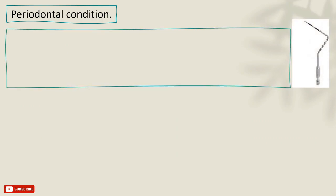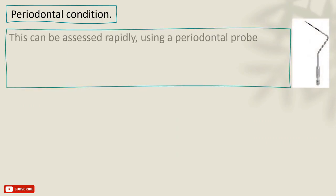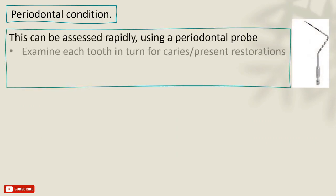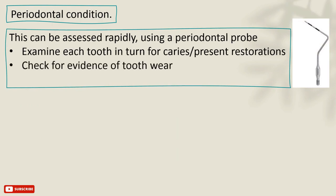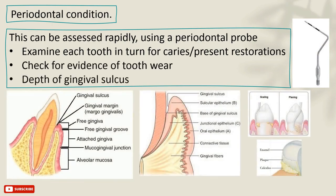Lastly, assess the periodontal condition. This can be done rapidly using a periodontal probe. Examine each tooth in turn for caries or existing restorations. Check for any evidence of tooth wear, then measure the depth of the gingival sulcus, and assess the patient's need for scaling or root planing.